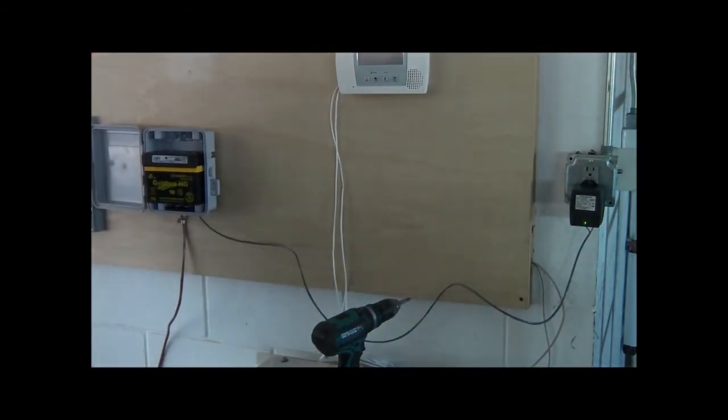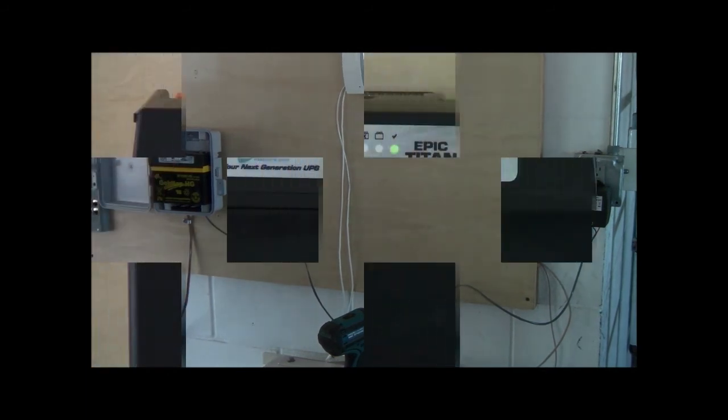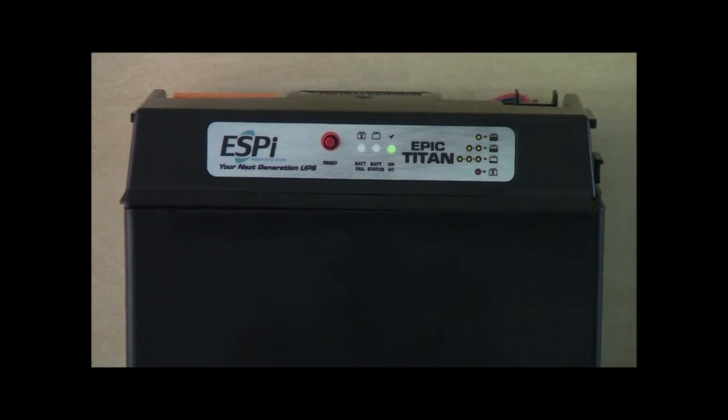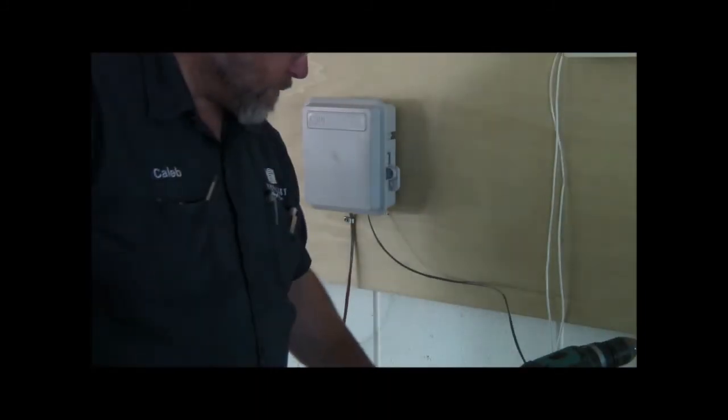When the AC-DC converter is plugged in, a green light will show if you have AC power. The green light will show on the front of the Titan unit and your ONT should power up. After a few installations, you will be as good as Caleb.